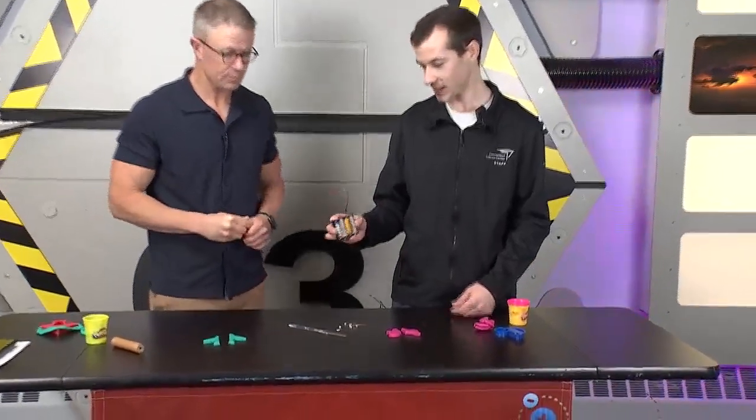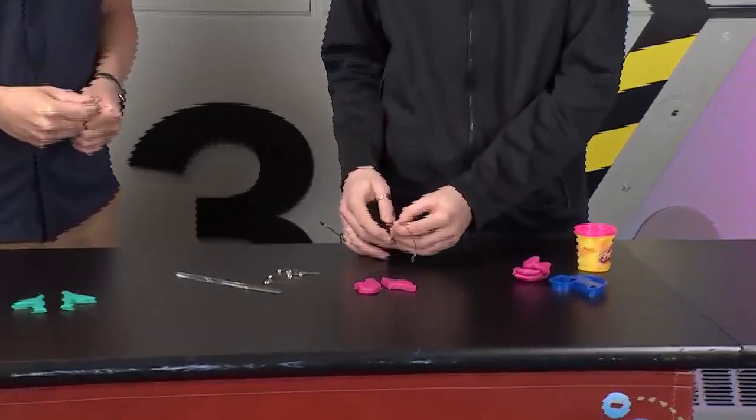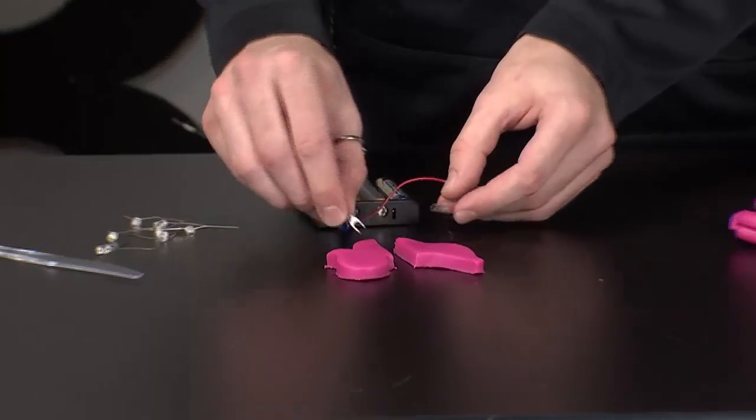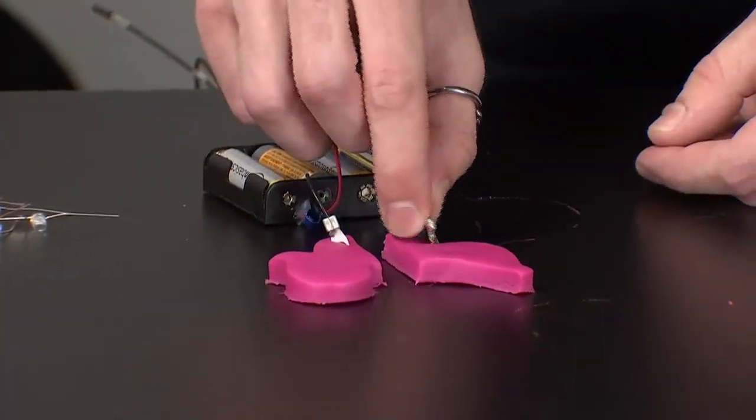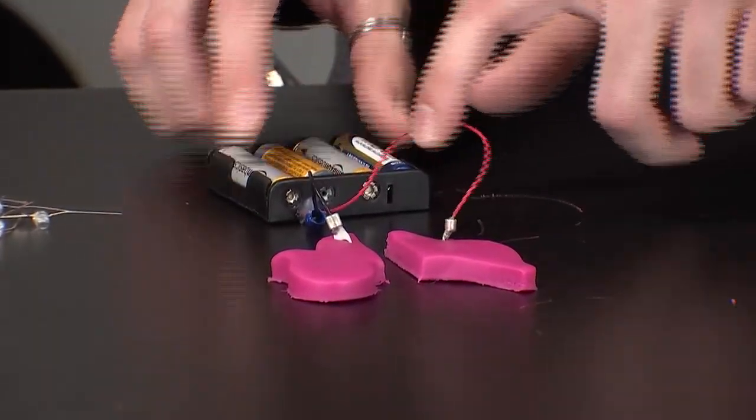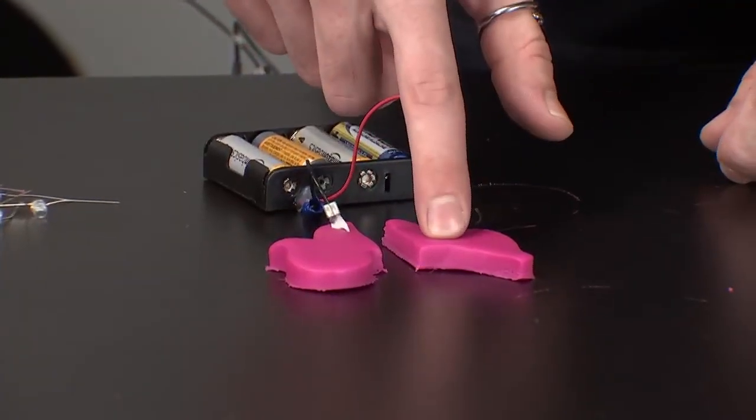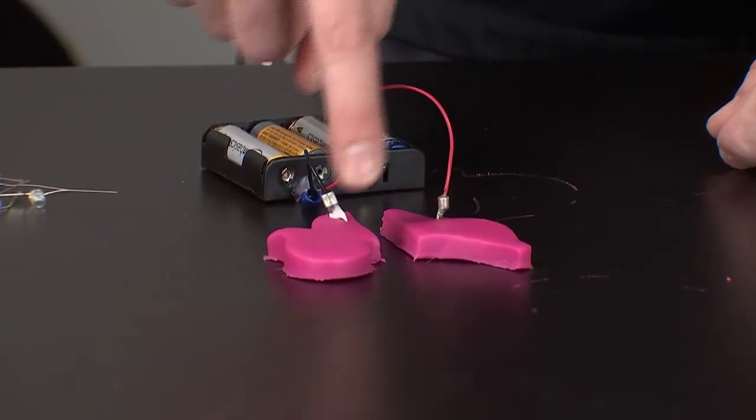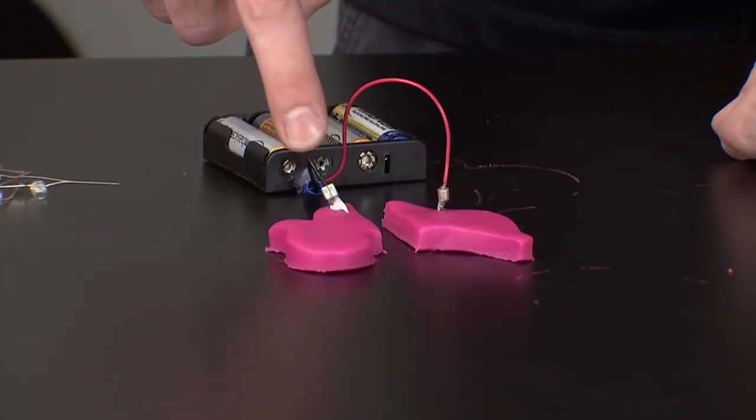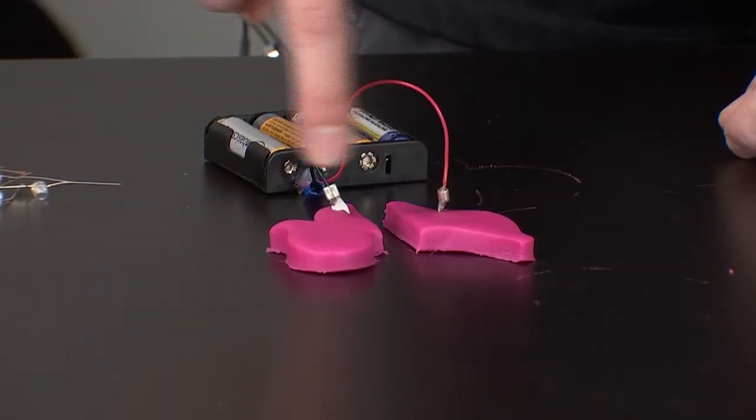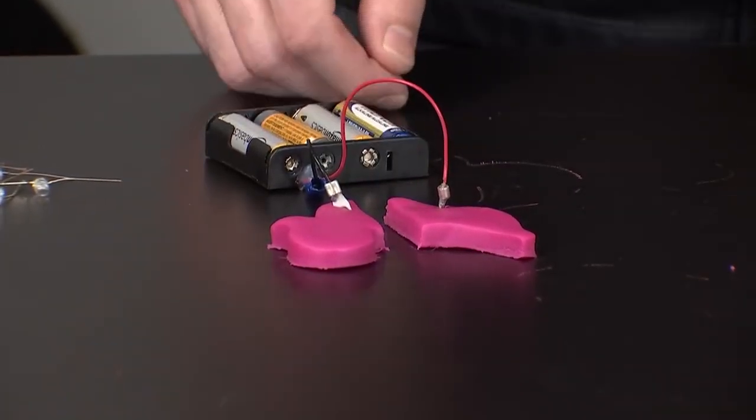So here I've got some batteries and we're gonna make a circuit with these batteries and with my Play-Doh. So I'm gonna plug one side into each piece of my Play-Doh and right now the electricity is escaping through the red wire. It's going out through the red wire into this piece of Play-Doh and it wants to go into this piece of Play-Doh so that it can go back through the black wire. So it wants to do this big circle but these two pieces of Play-Doh aren't connected.